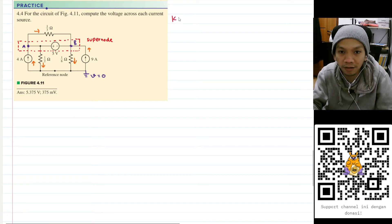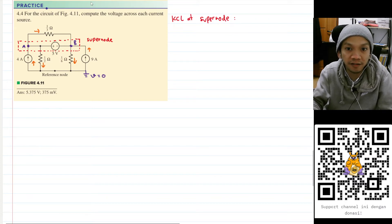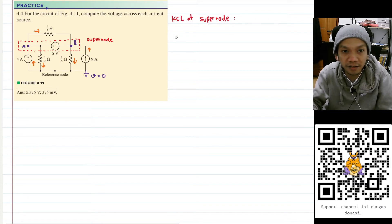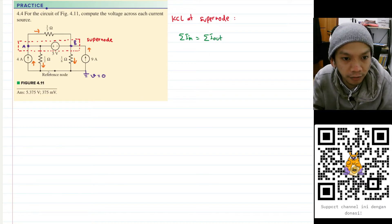Okay, so now let's do KCL in the super node. KCL at super node. Okay, what does KCL say? KCL says that the sum of the current that goes in will equal to the sum of the currents that goes out.